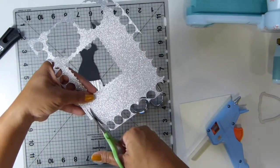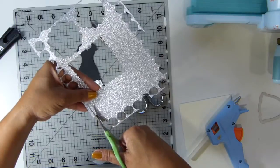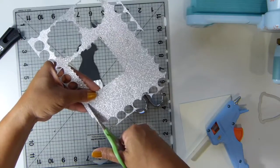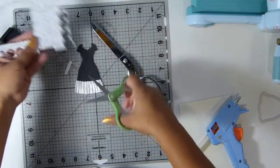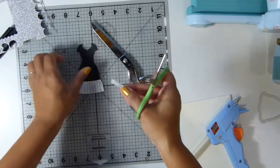I'm going to fast forward this section, but basically I cut the tiny little belt and then I used some glue dots to adhere the little belt to the dress.